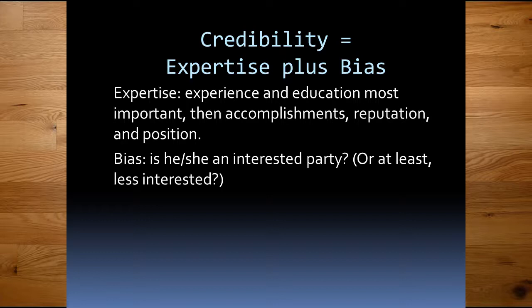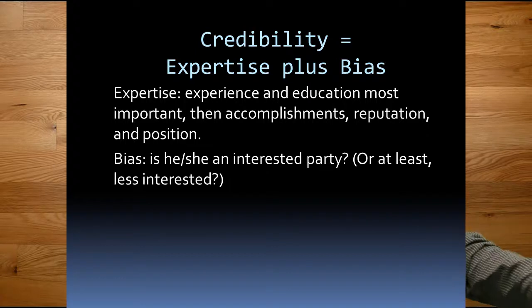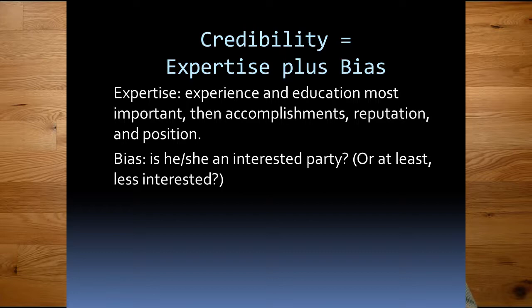Bias, of course, interacts with all this. How interested are they? How much do they want you to believe what they're saying? How much do they want you to buy their product or pay more money for a new car part? If that's very high, in some cases it can override their level of expertise. The mechanic who is pulling out spark plugs and making things up would fit that example — even though his expertise is high, his bias just overrides the expertise.